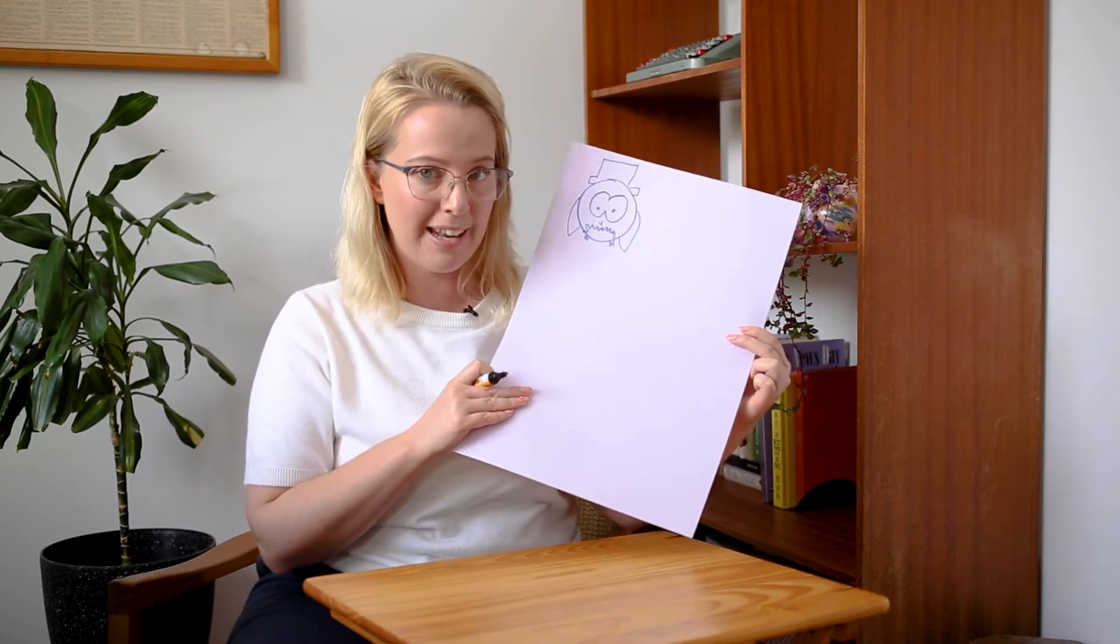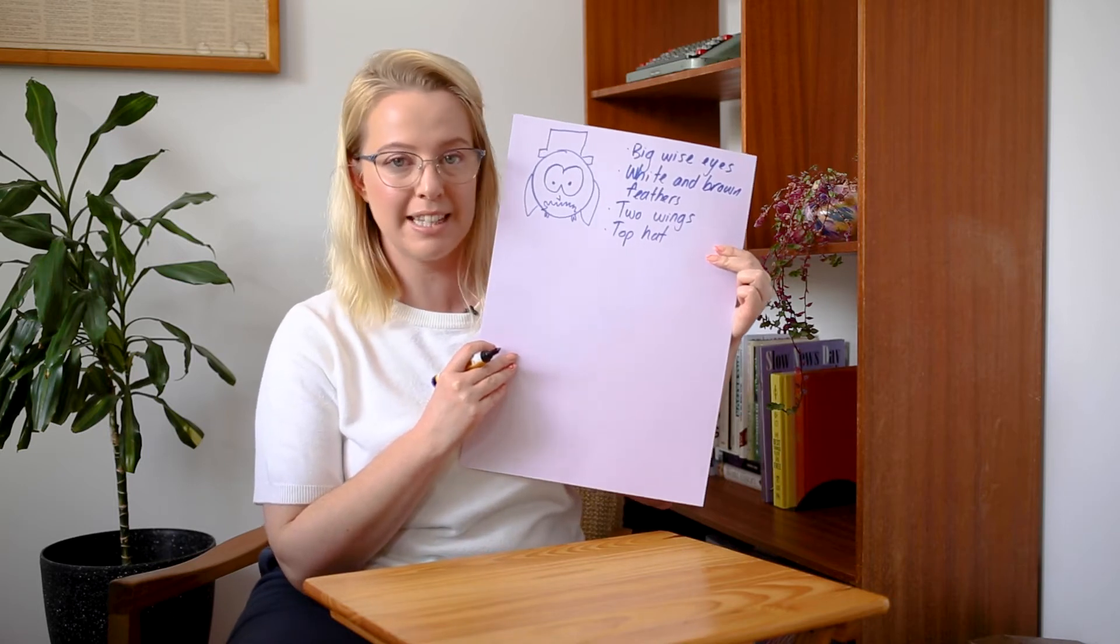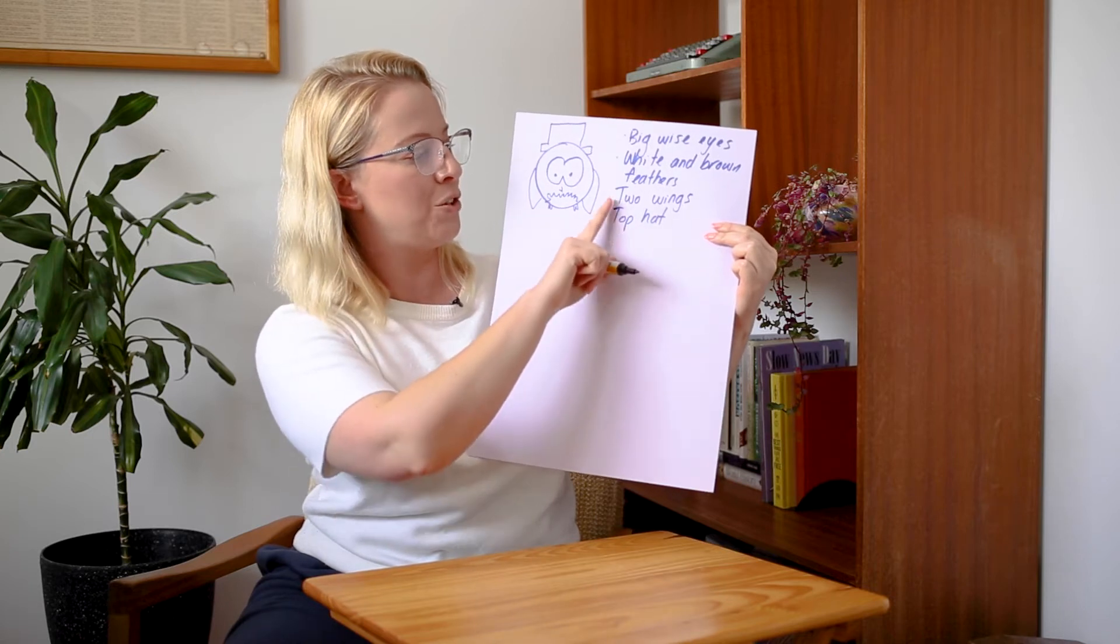Alright, so now we can start doing our planning. We're going to start writing some words or little sentences for our plan, and we're going to turn those into sentences. So I'm going to think of maybe three or four things that I can write about. So the first thing I'm going to write about is that he's got big wise eyes. Wise and eyes, it rhymes. I'm going to write about his white and brown feathers. And then I'm going to talk about his two wings to help him fly. And then I'm going to talk about the most important part, his top hat. I have put a bullet point next to those four ideas and I'm going to turn into sentences. So I know I've got big wise eyes, white and brown feathers, two wings and top hat.